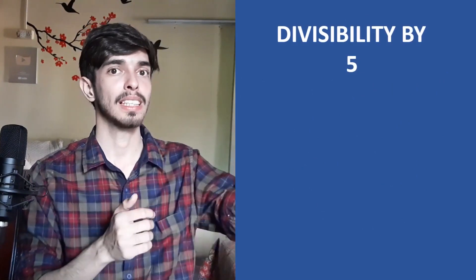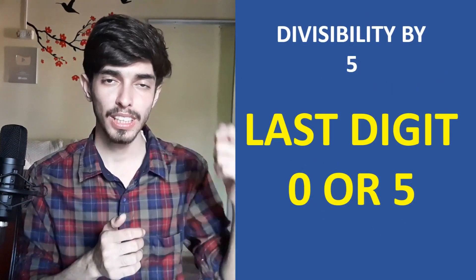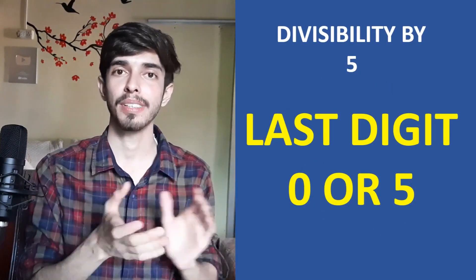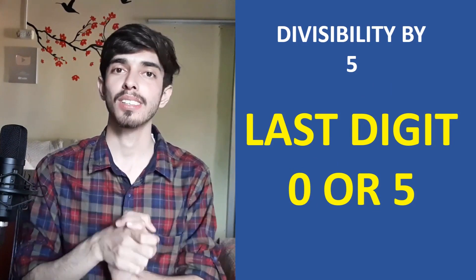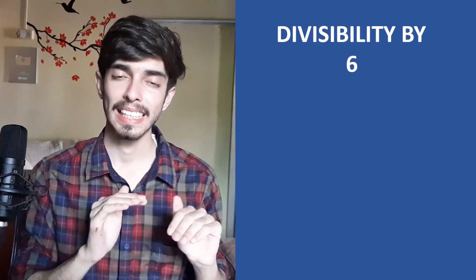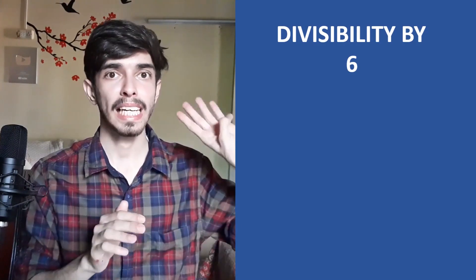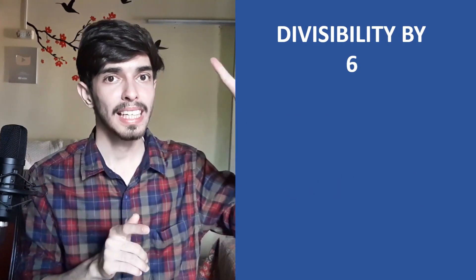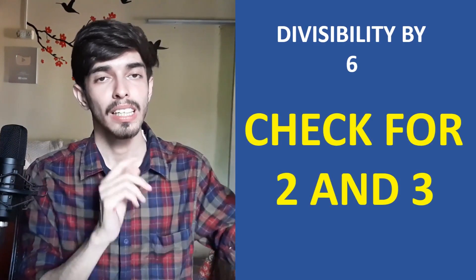Next, the divisibility test by 5 is extremely simple: if the last digit is either 5 or 0, then it is divisible by 5; otherwise not. I don't think you need an example for this one.